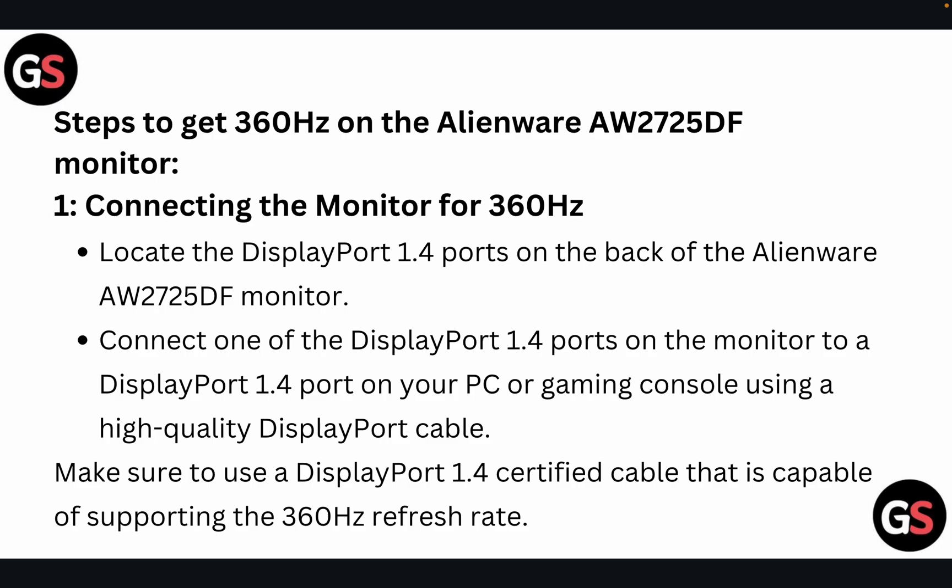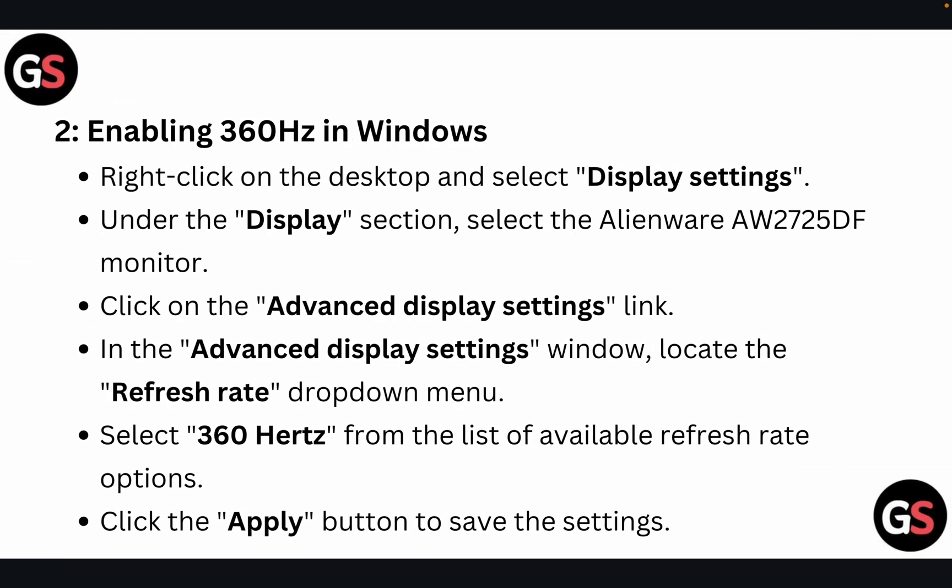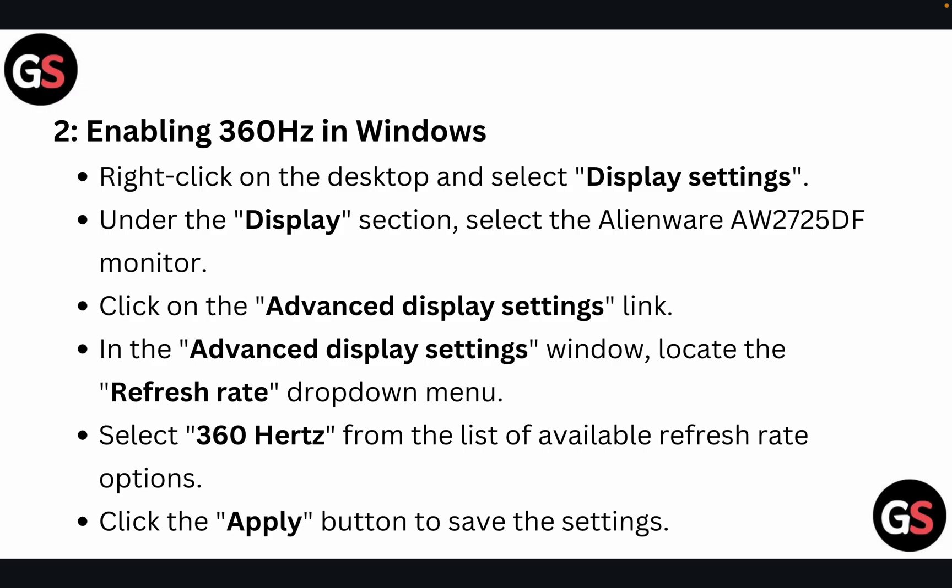Step 2: Enabling 360 hertz in Windows. Right-click on the desktop and select Display Settings. Under the display section, select the Alienware monitor and click on the Advanced Display Settings link. In the Advanced Display Settings window, locate the refresh rate drop-down menu and select 360 hertz from the list of available refresh rate options. Click the Apply button to save the settings.